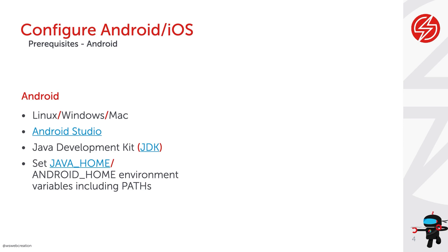Secondly, you need to download Android Studio — I will share the link in the comments. Android Studio is the IDE you need to use to develop something for Android, but it also provides the option to create an emulator. For Android Studio you also need a Java Development Kit, so you need to download that as well — a link will be provided in the comments.